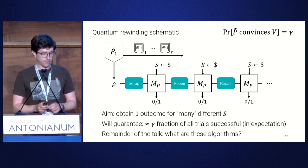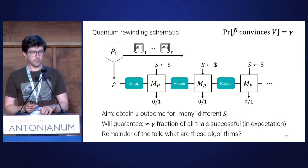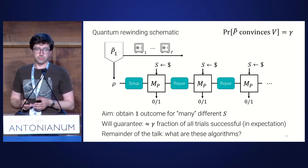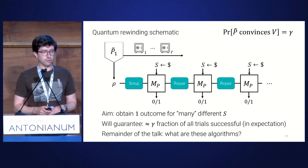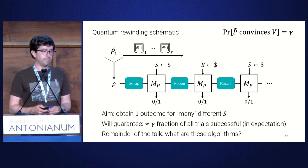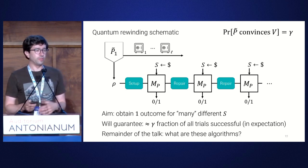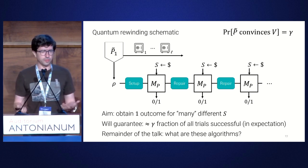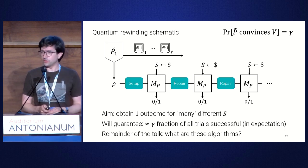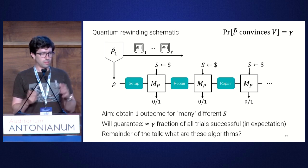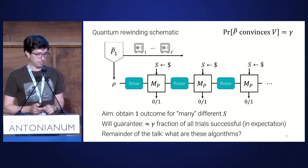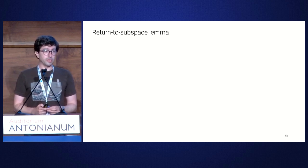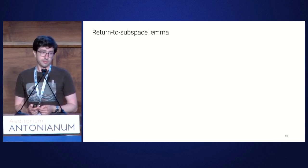For the remainder of the talk I'll describe these algorithms at a reasonably high level. The first technical tool is the return-to-subspace lemma. This is a statement about what happens when you apply alternating projective measurements. You start with state psi_A in the image of projector Pi_A, and you alternate with measurement M_B. You look at the first time M_A outputs one again after applying M_B repeatedly.